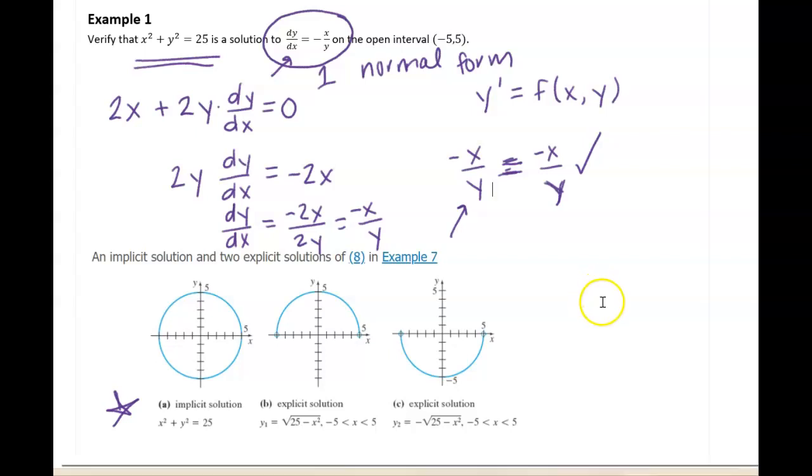Now, notice this solution curve is not a function when written as a circle. We call that an implicit solution, and it is not a function because it does not pass the vertical line test. However, it is continuous, so I'm good as far as this being a possible type of solution. Just understand that that solution is not a function.